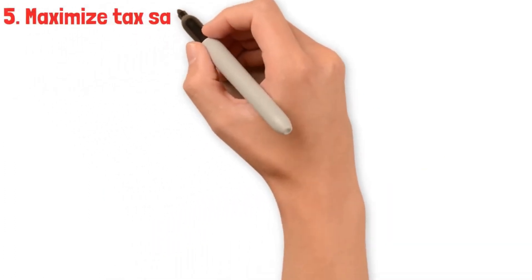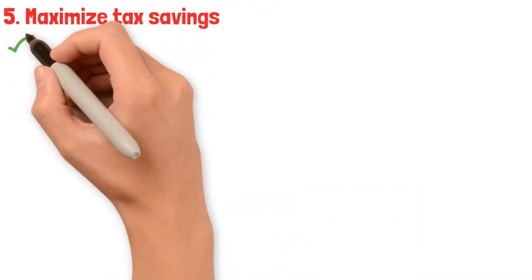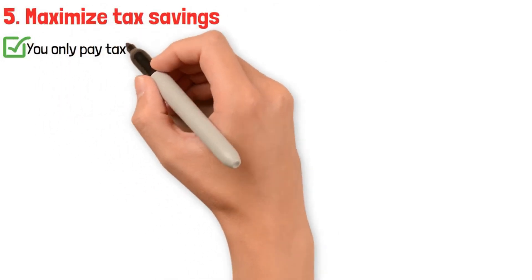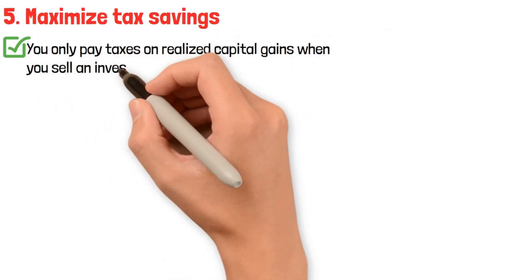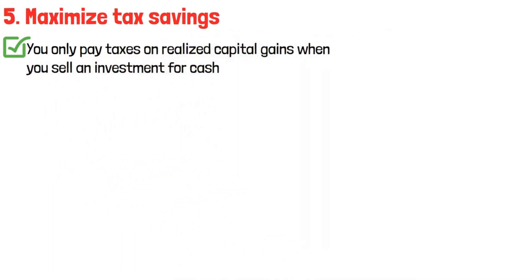5. Maximize tax savings. Do you know that an important exception to the Internal Revenue Service tax laws is that you only pay taxes on realized capital gains when you sell an investment for cash? That's a massive loophole in the law that you can use.